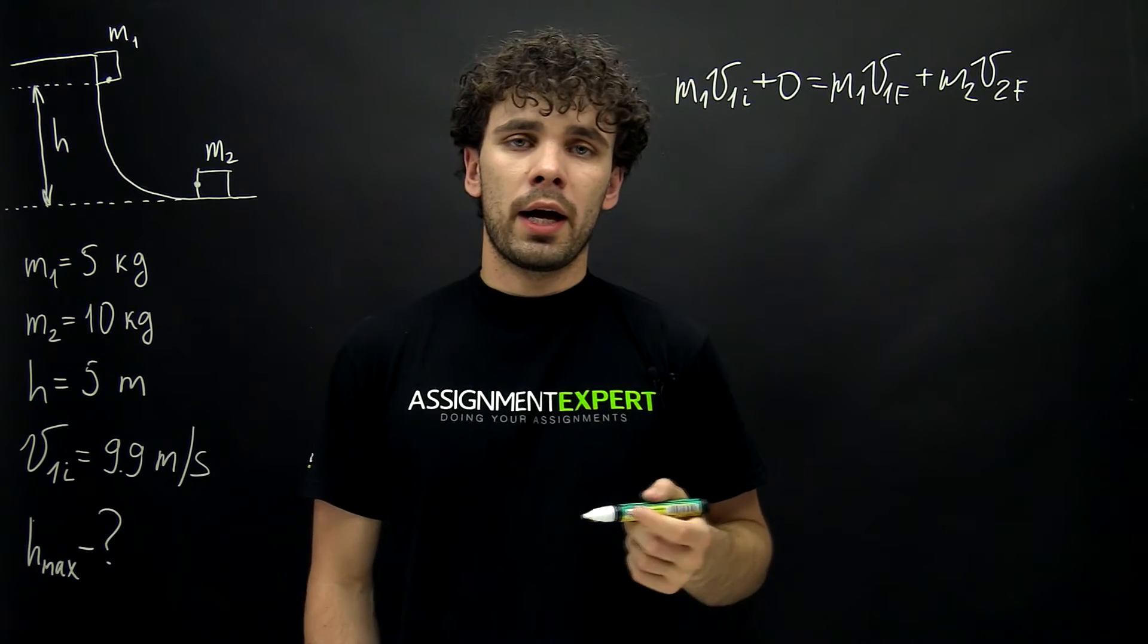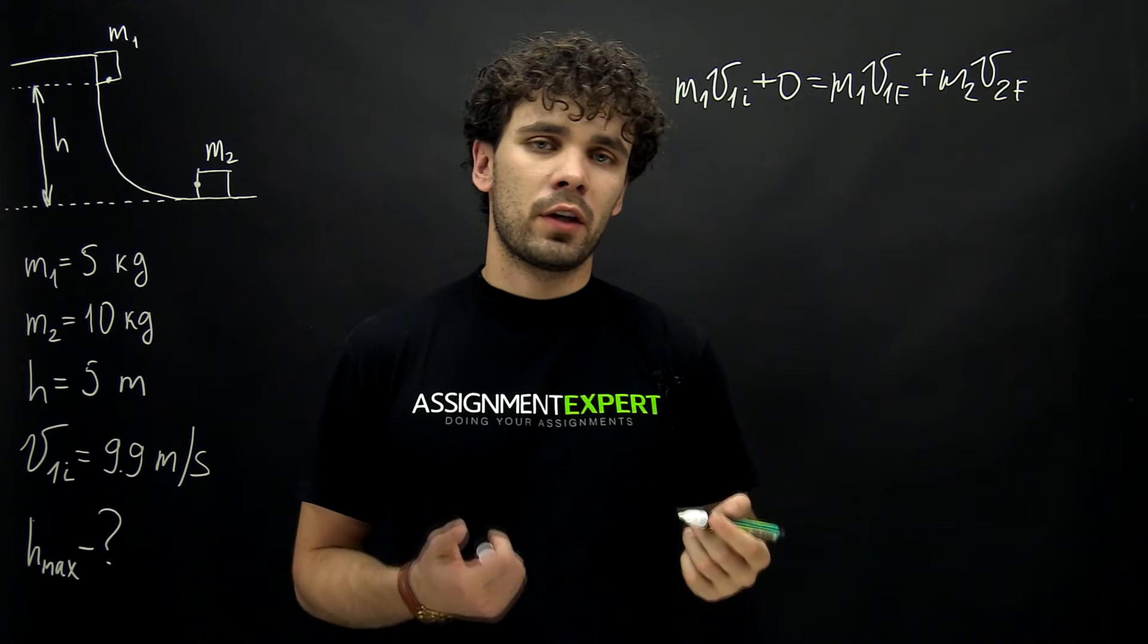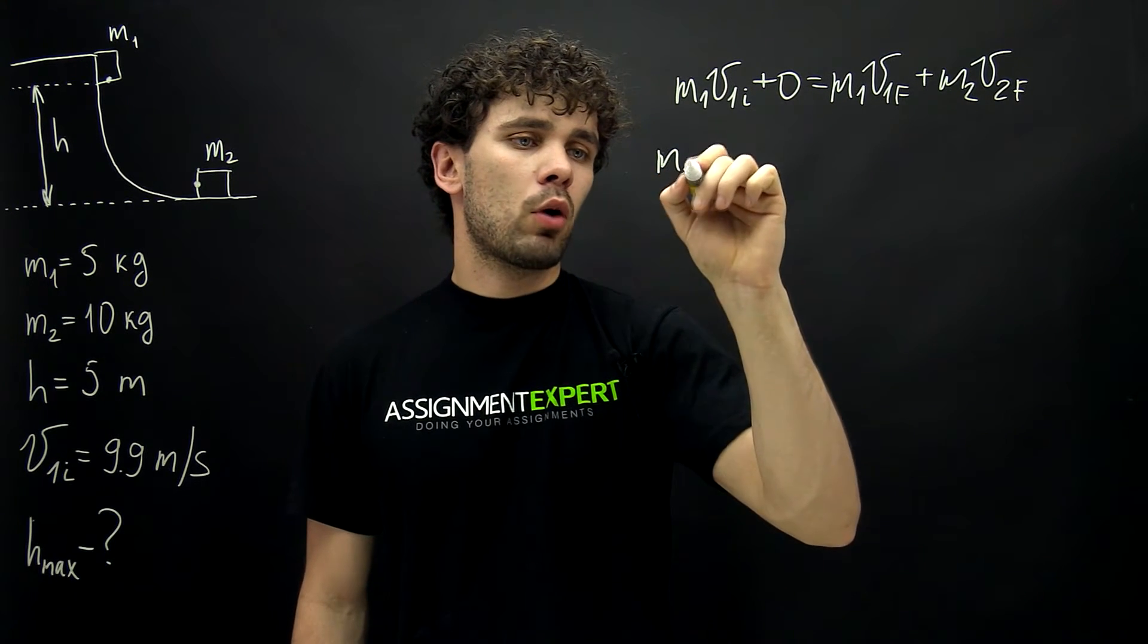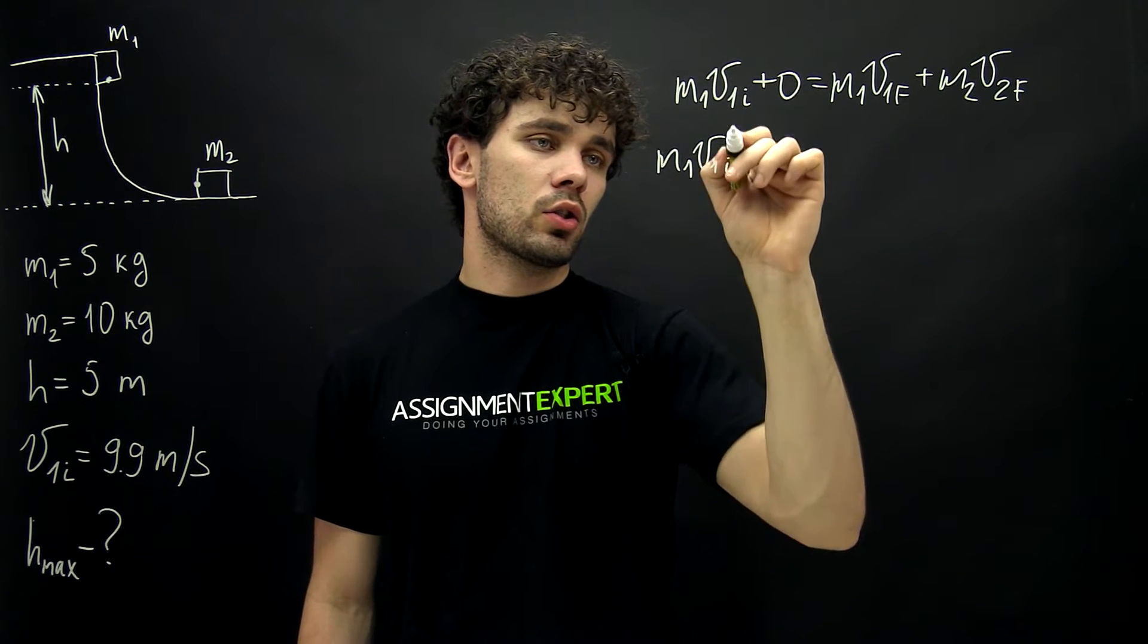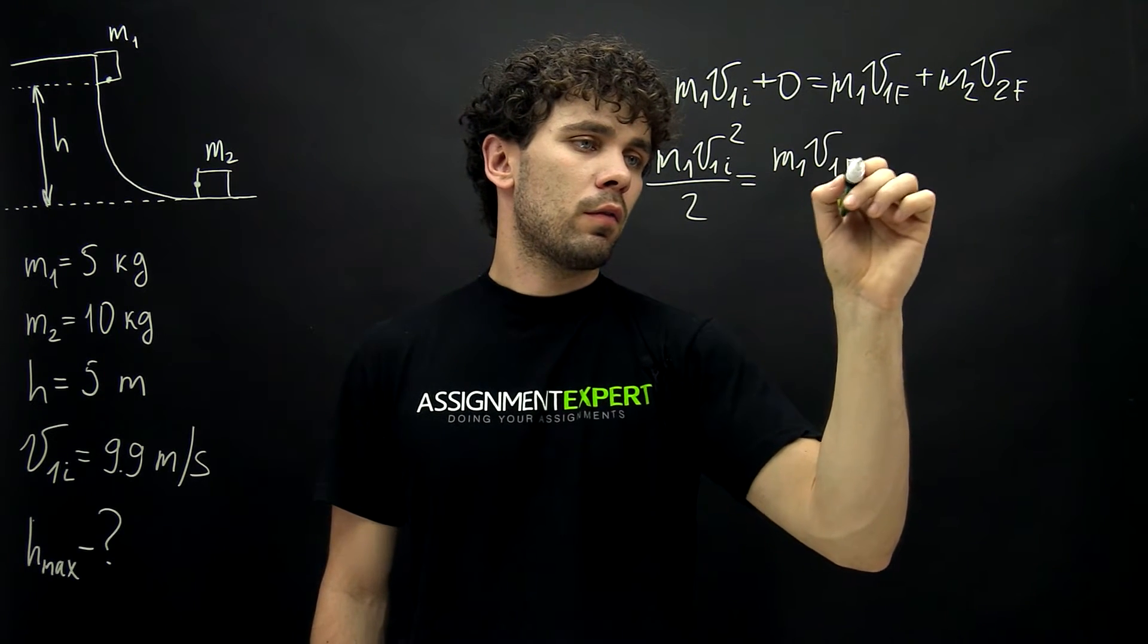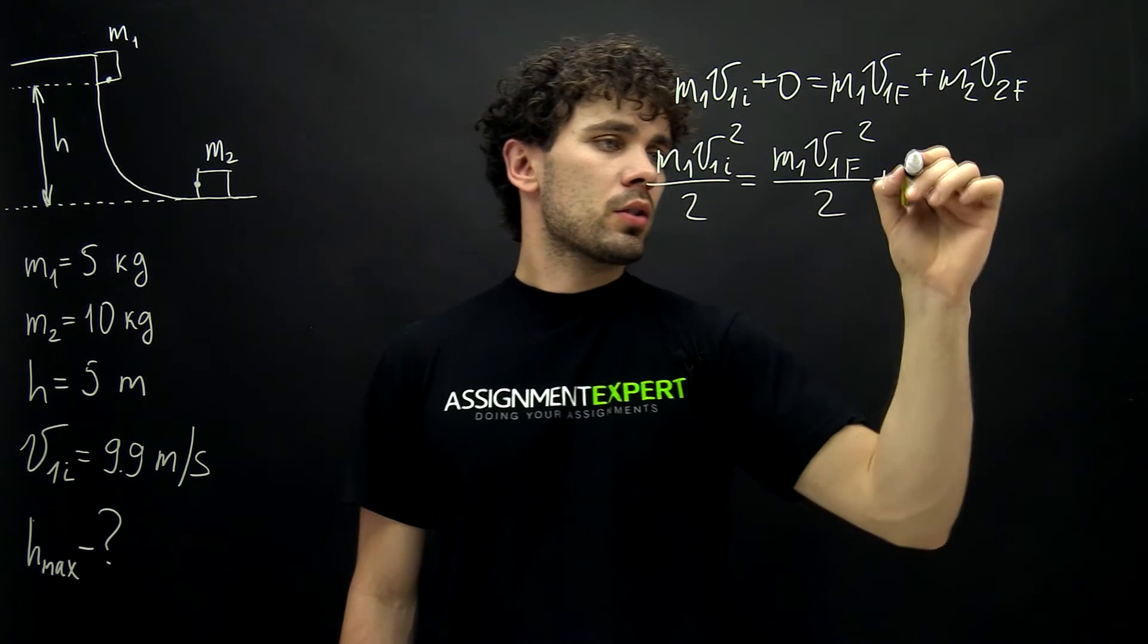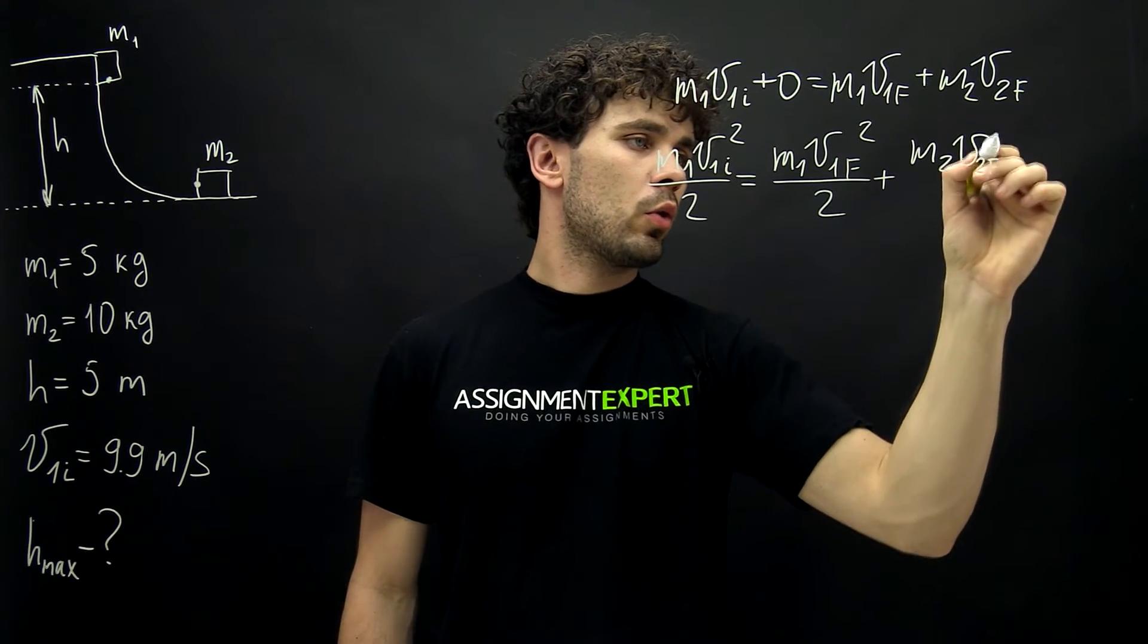Now also we know that this is the elastic collision. Therefore there is a conservation of kinetic energy. So we also have the relation m1 times v1 initial squared over 2 equals m1 times v1 final squared over 2 plus m2 times v2 final squared over 2.